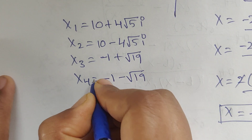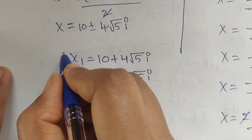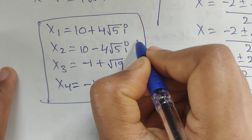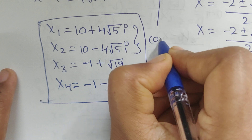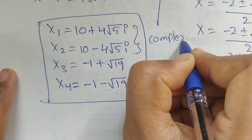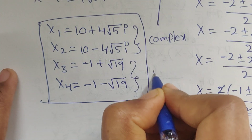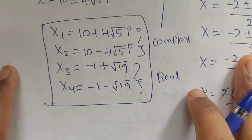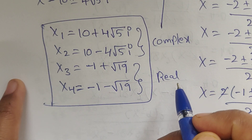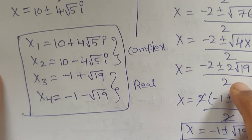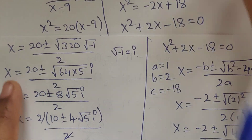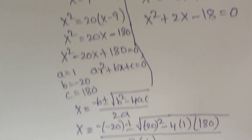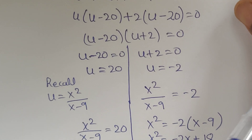So we got four solutions: x1 equals 10 plus 4 square root of 5 i, x2 equals 10 minus 4 square root of 5 i, x3 equals minus 1 plus square root of 19, x4 equals minus 1 minus square root of 19. Two complex solutions and two real solutions. Thank you for watching. Please subscribe for more videos. Take care, bye bye, see you in the next video.